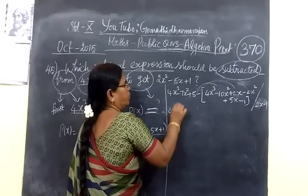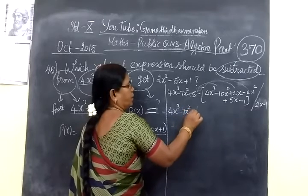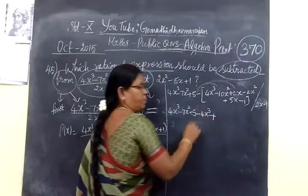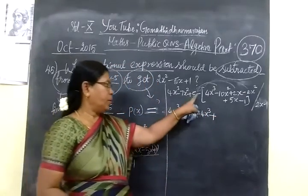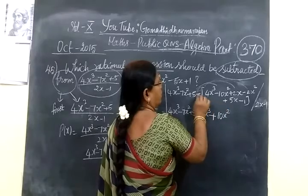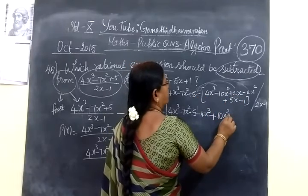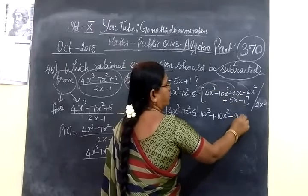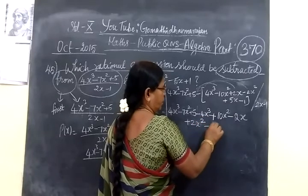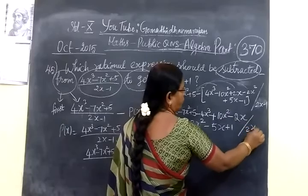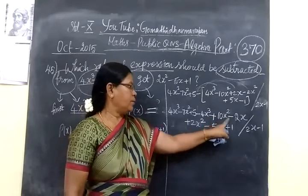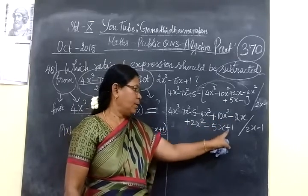Take minus inside. So minus 4x cube, minus minus plus, then plus 7x square plus 10x square. Then plus 2x plus 5x minus 1. After sign change: minus 4x cube then plus 2x square minus 5x plus 1, divide it by 2x minus 1. Minus then plus, then minus, then plus, then minus, then plus.